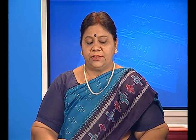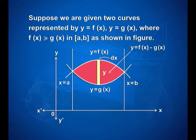Now let us study about how to calculate the area between two curves. Intuitively, in the sense of Leibniz, integration is the act of calculating the area by cutting the region into a large number of small strips of elementary area and then adding up these elementary areas. Suppose we are given two curves represented by y is equal to f of x and y is equal to g of x, where f(x) is greater than or equal to g(x) in the closed interval [a, b]. We have two curves with width dx and height equal to f(x) minus g(x).